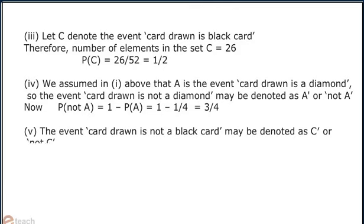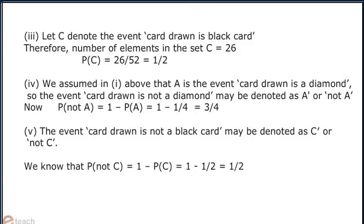5. The event 'card drawn is not a black card' may be denoted as C', or not C. So probability of not C is equal to 1 minus probability of C, that is 1 minus half, which is equal to half.